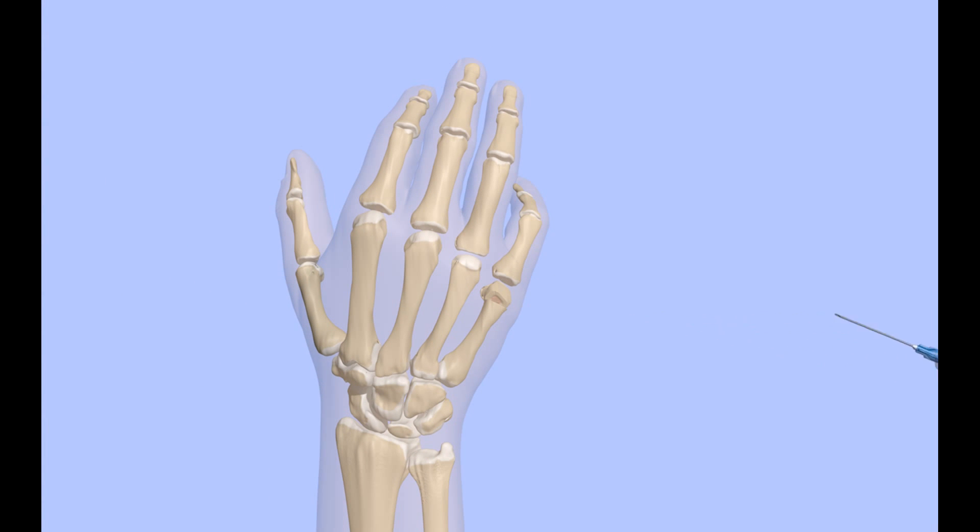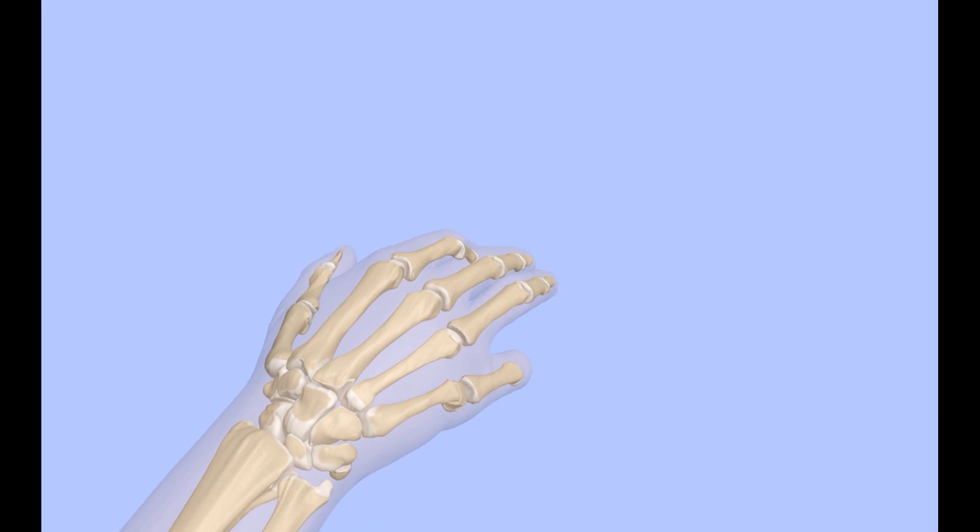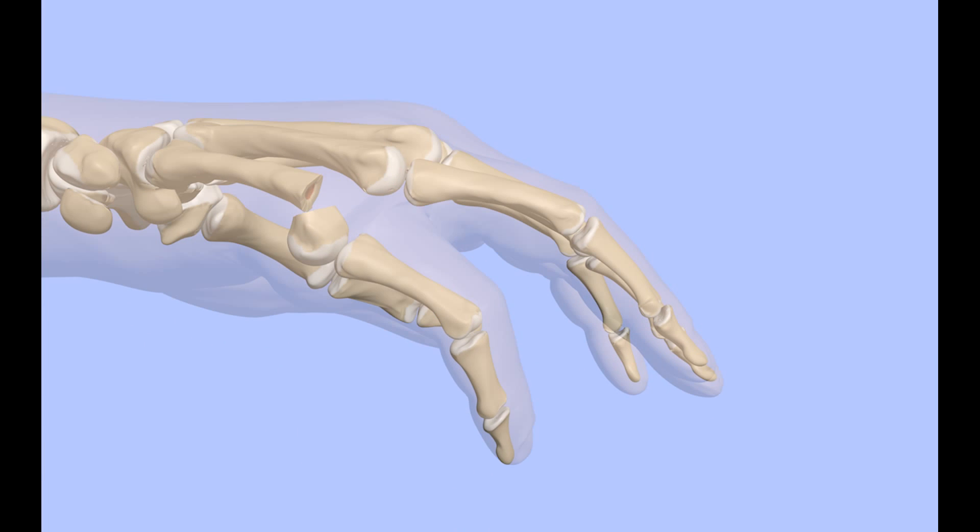Once the fracture site is numb, traction can be applied to the small finger and the distal fragment nudged back into alignment.